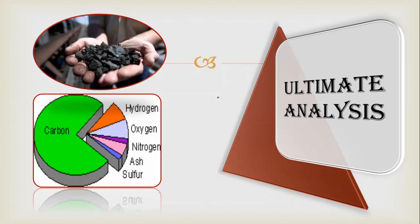Hello everyone. Today I will discuss ultimate analysis of a sample. In the previous video we discussed proximate analysis of a coal sample, a fuel sample. In proximate analysis the results were approximate and varying — it does not give major results related to the elements. It was only focused on percentage moisture, percentage volatile matter, percentage ash, and percentage fixed carbon. Today we are going to discuss the better method of analyzing the sample, which is ultimate analysis.